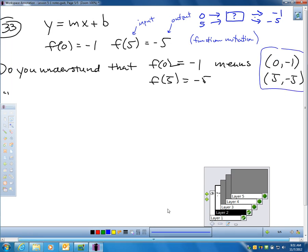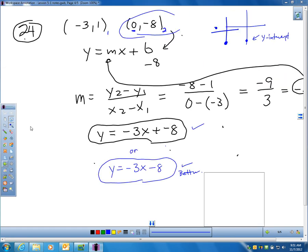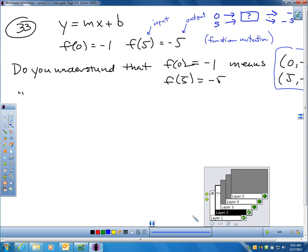which is the same thing as saying, and I have a picture of it here, it's the same thing as saying if I put x 5, that means I get spit out negative 5 for y. Well, this is just another way of writing these two points.